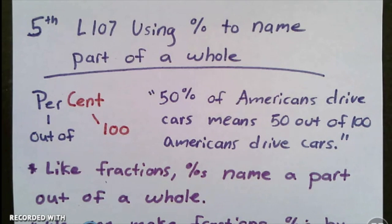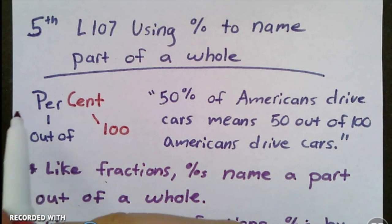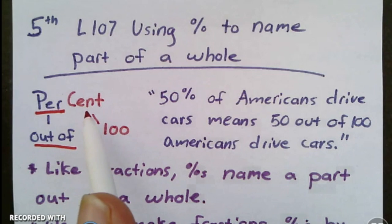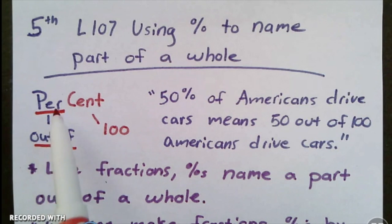The word percent itself can give us a huge hint on how to solve these problems. The word 'per' means out of, and the word 'cent' means a hundred. There's a hundred cents in a dollar, a centipede has a hundred legs, so we can remember that 'cent' means a hundred and 'per' means out of. So percent literally means out of a hundred or of a hundred.